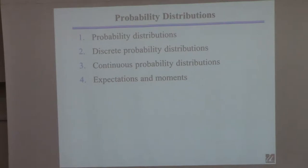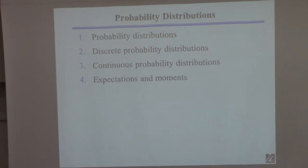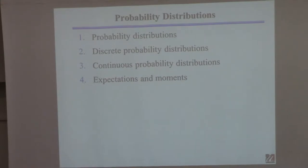we are going to talk today about probability distributions. I've been alluding to this the last couple of lectures. When we talk about probability, underlying that is something called a probability distribution — it covers the chance, the probability of certain events happening. You're already familiar with one probability distribution, even though you may not call it that: the normal distribution, or Gaussian distribution, the bell-shaped curve. That's a probability distribution, the most common one. We're going to talk about that on Tuesday. Everyone knows the homework is due on Tuesday because we got behind schedule — you should check the schedule because everything got pushed back for the next few weeks because of the snow day.